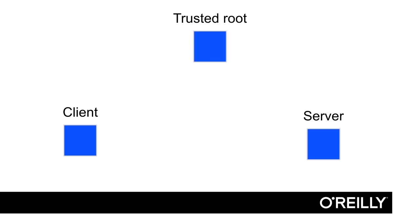Let's take an example. We have a client and a server. They do not know each other, but they both know a common trusted root server. So the client and the server both trust the root and does not know each other. That trust relationship to the root is used by the certificates to build a trust between the two parties, client and server in this example.